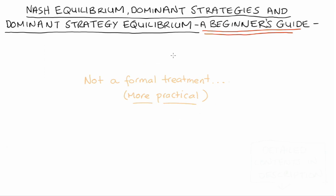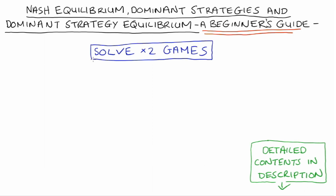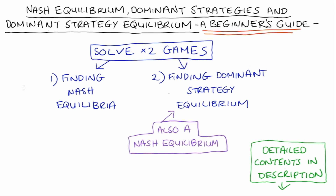There are detailed contents in the description if you want to skip ahead. Very briefly, in this video I will go through two games. In the first game I will demonstrate finding Nash equilibrium, and in the second game I will find a dominant strategy equilibrium, which will also be a Nash equilibrium. Just to note, we're only dealing with pure strategies here — so only pure strategy Nash equilibrium and dominance with pure strategies.